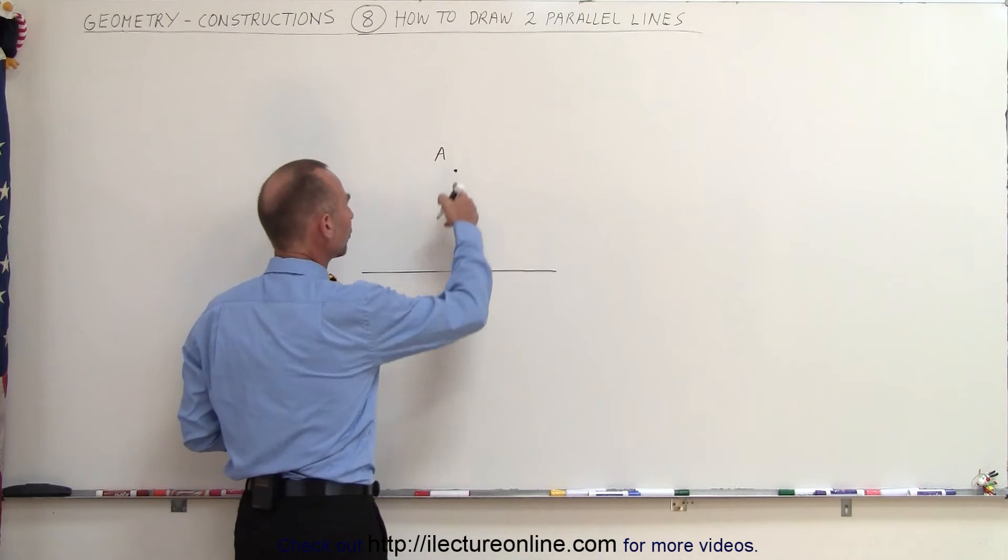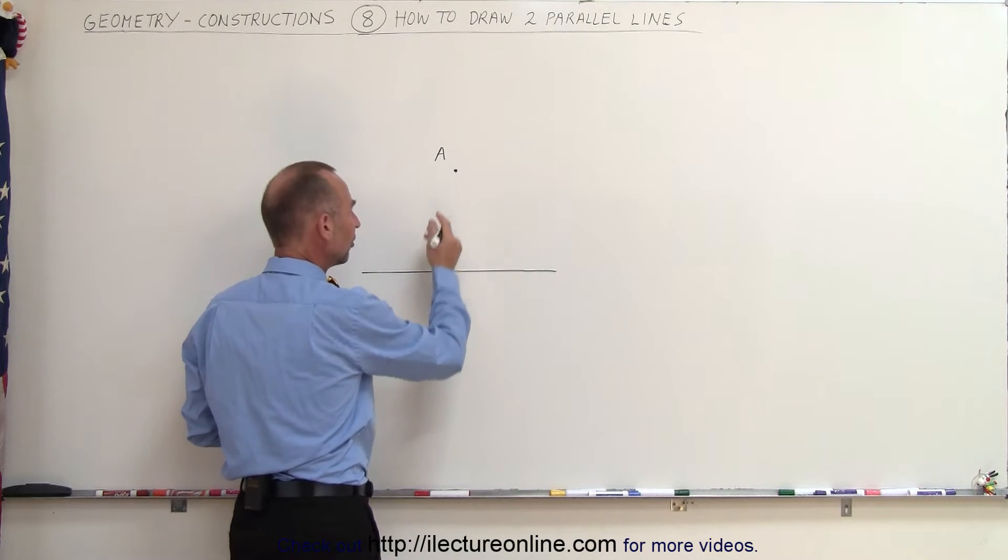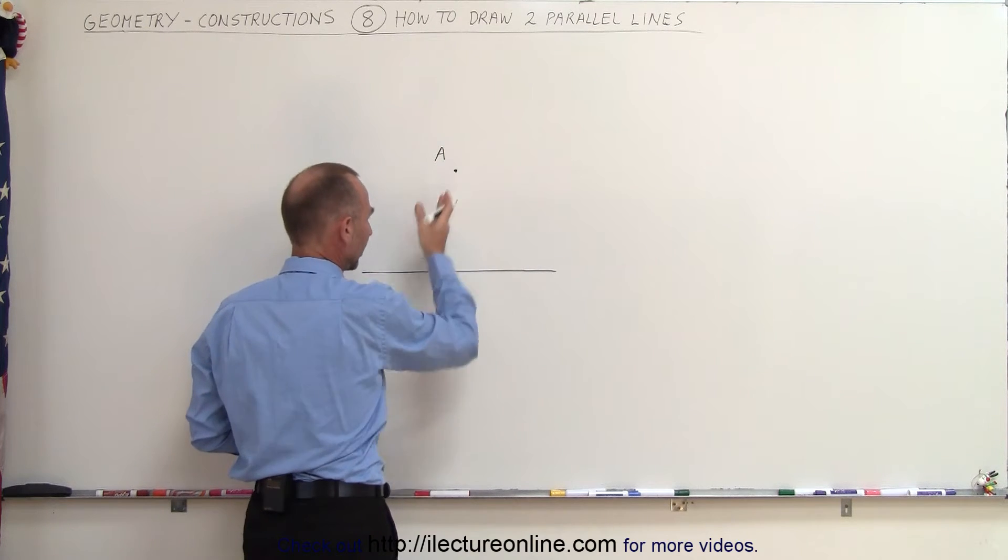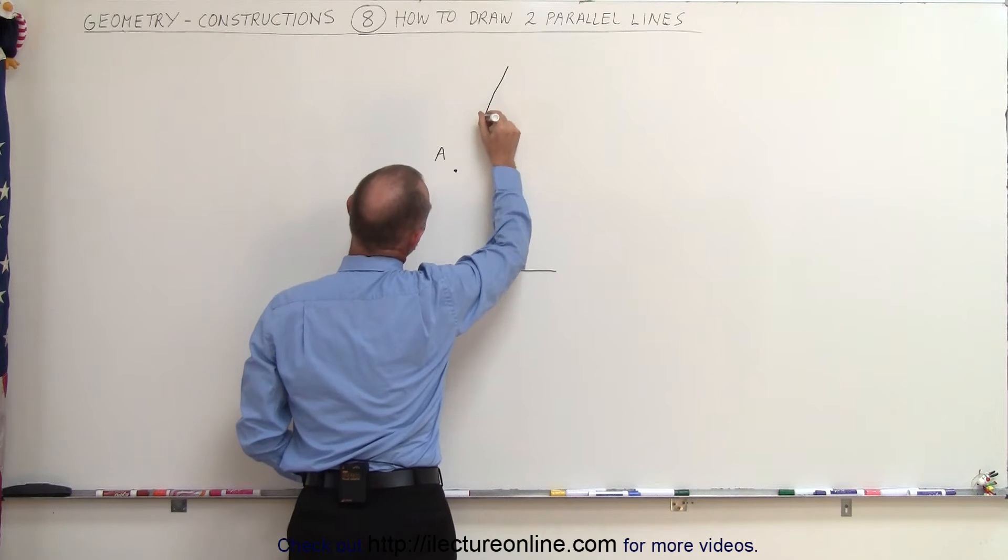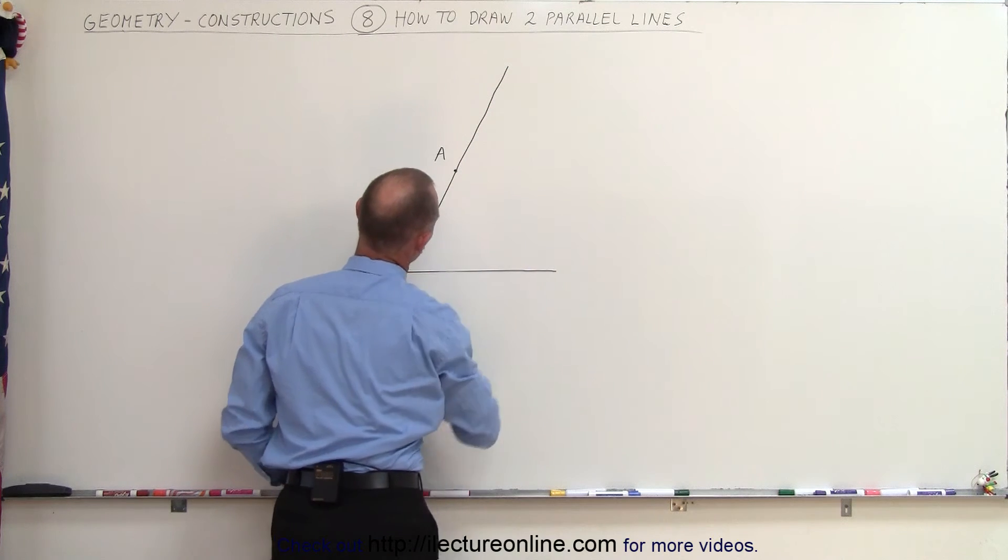So the way we do that is we draw a line through point A to this line. It doesn't have to come in perpendicular, it can come in at an angle. So let's go ahead and do that.